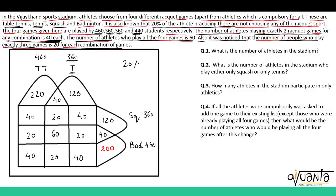Now we have the values of all the regions. Let us solve the questions. The first question is: what is the number of athletes in the stadium? We know that 20% of the athletes were not playing, which means the sum of all regions in these four sets gives us 80% of athletes. So 80% are playing and 20% are not, and using that we can easily find out the total number of athletes.